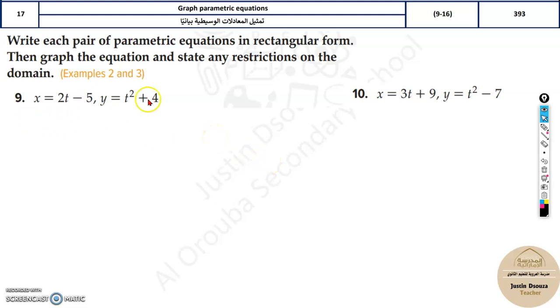In this topic, we have parametric equations. We have to convert them to rectangular form and graph them. Converting to rectangular form means you can see the equation is in terms of a different parameter. X is equal to 2t. T is a different parameter altogether.